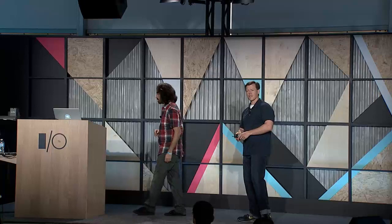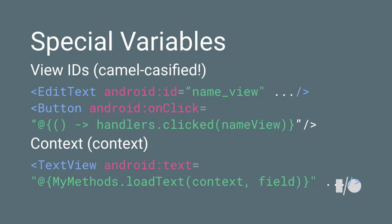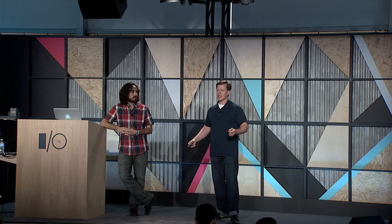You can also use a few extra variables in your lambda expressions now. One of them is view IDs — you can reference your views right in the expression using the camelCase-ified version of the view ID, the same field you use in your binding. You can also use the context — many of you wanted to access context without accessing a specific view, so we give you the context of the root as a generated synthetic variable. By the way, if you create a variable called 'context', ours won't be generated — don't do that, it would override our context.